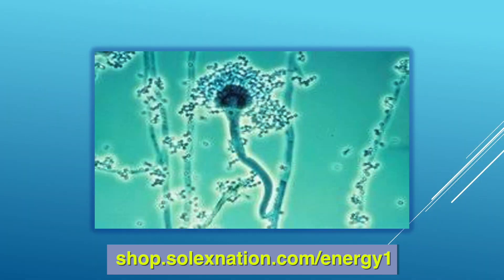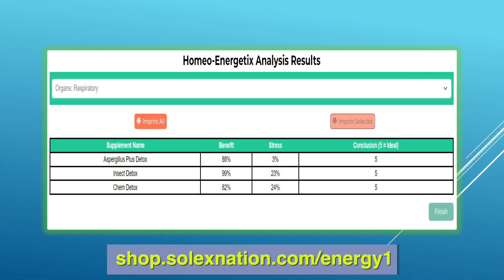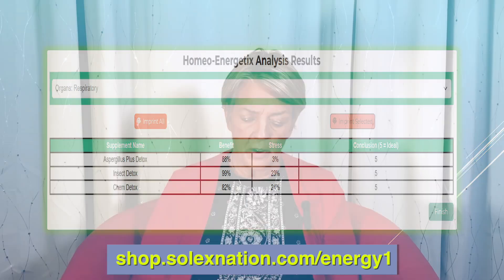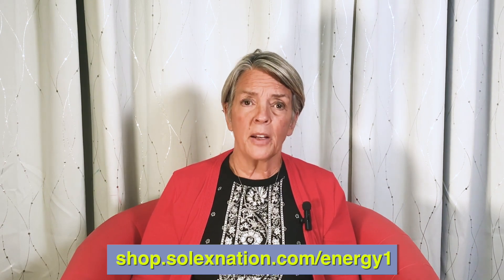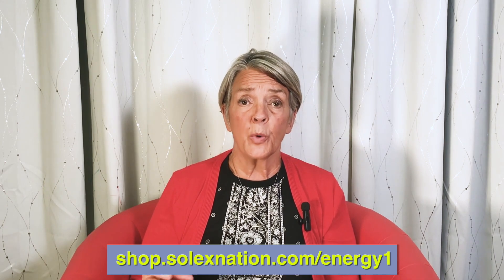That gives you the ability to go in and customize the remedy for that specific part of the body. You can see a picture of what Aspergillus looks like under a microscope. The next PDF shows an example where, after phase three, someone has gone into the respiratory area and the Aspergillus Plus Detox has come up as highly beneficial, very low stress, and ideal for that part of the body — so it would be imprinted along with the other remedies for that area to start detoxing it from the body.